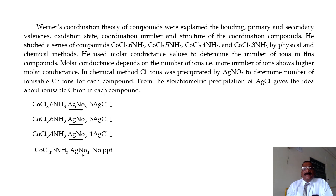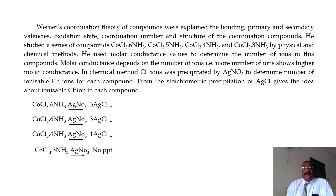By physical and chemical methods, he studied these compounds and used the molar conductance value to determine the number of ions in each compound. Molar conductance depends on the number of ions — more ions give higher molar conductance. In chemical methods, Cl⁻ ions were precipitated by excess AgNO3 to determine the number of ionizable Cl⁻ ions for each compound. The stoichiometric precipitation of AgCl gives information about the ionizable Cl⁻ ions in each compound.